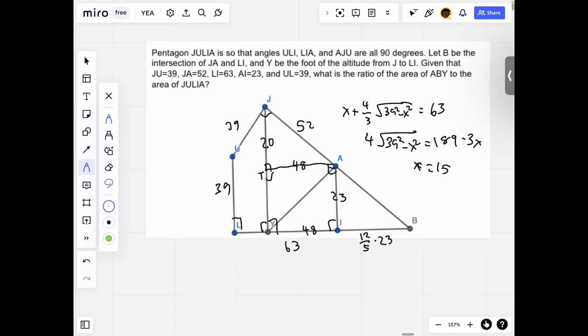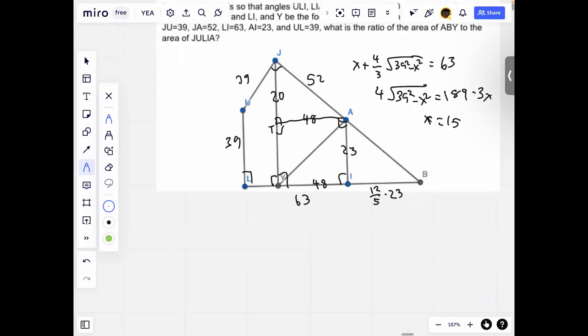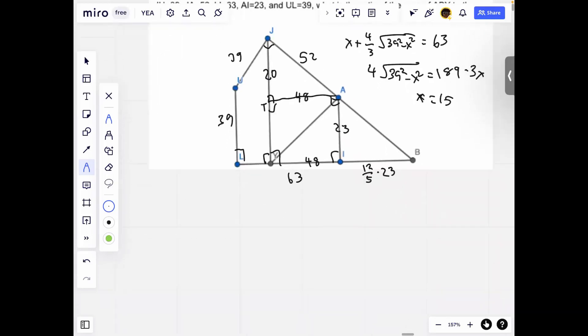Therefore, we can get the base of ABY. So the base of ABY is just 48 plus 12 over 5 times 23. And then the area is this times 23 and then over 2. That's the area of ABY.